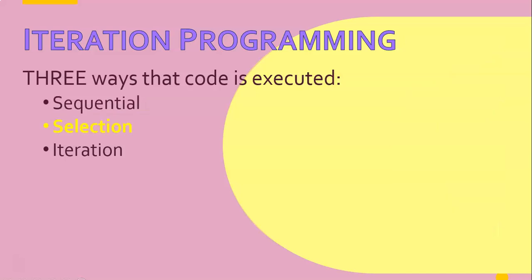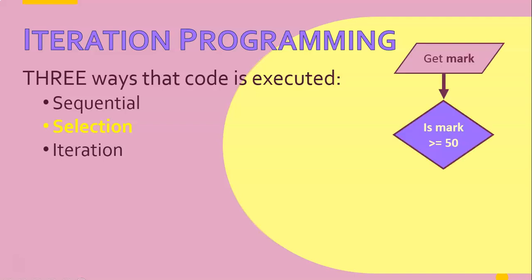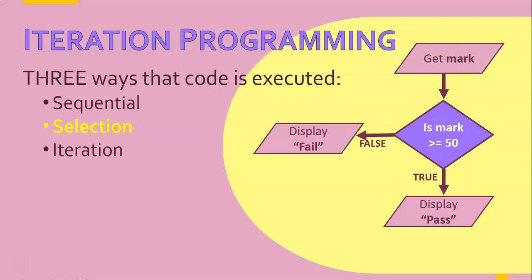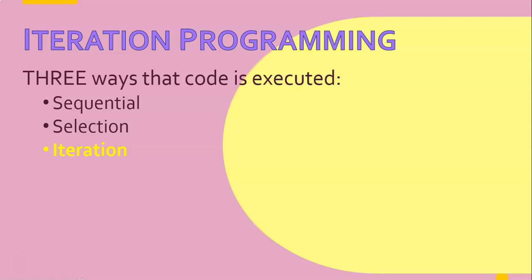Then we moved on to selection programming - that's when we decided we only want to do certain code based on certain conditions. We would get a value, then ask a question, and based on the answer of that question we determine if we did one set of code or another set of code. That's what we did in our selection programming series.